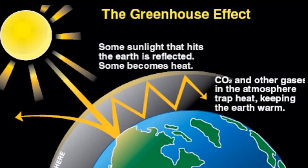The earth's atmosphere has always acted like a greenhouse to capture the sun's heat. Without our atmospheric greenhouse, the earth would be very cold. Today, the problem is not that too little sun warmth is reaching the earth, but that too much is being trapped in our atmosphere.